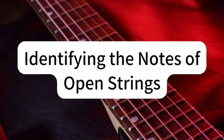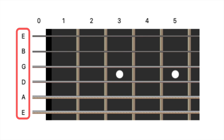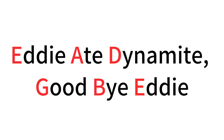Now let's take a step back from the scales and intervals and focus on our guitar. Your guitar has six strings, and each one corresponds to a particular note when played open, meaning you're not pressing down on any frets. Starting from the thickest string and moving to the thinnest, these are the notes of the open strings: 6th string E (lowest pitch), 5th string A, 4th string D, 3rd string G, 2nd string B, 1st string E (highest pitch). An easy way to remember this is by using a mnemonic such as: Eddie ate dynamite, goodbye Eddie.